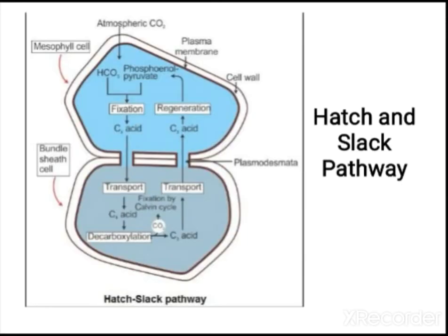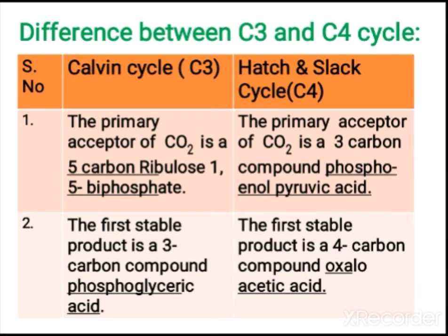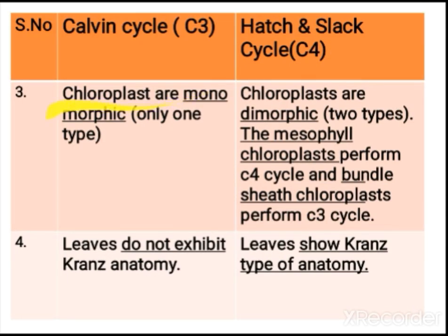Now let us compare C3 and C4 cycles. In the C3 (Calvin) cycle, the primary CO2 acceptor is ribulose bisphosphate, and the first stable carbon compound formed is PGA (phosphoglyceric acid). In C4 plants, the primary acceptor is phosphoenol pyruvate and the first stable compound is OAA (oxaloacetic acid). C3 plants have monomorphic chloroplasts, while C4 plants have dimorphic chloroplasts — mesophyll chloroplasts perform the C4 cycle and bundle sheath chloroplasts perform the C3 pathway.